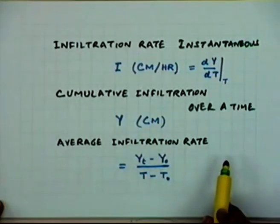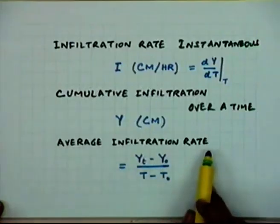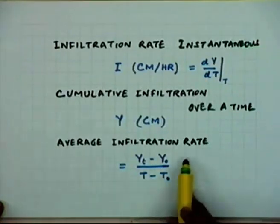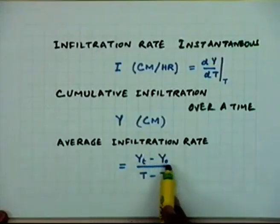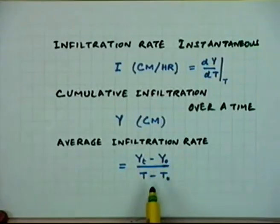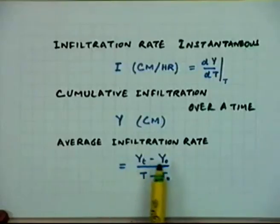Another term used is the average infiltration rate. By finding the accumulated depth at a particular time and at a previous time, you can determine how much infiltration occurred over that interval and what duration it took. This allows expressing the average infiltration rate over successive intervals instead of the instantaneous rate.